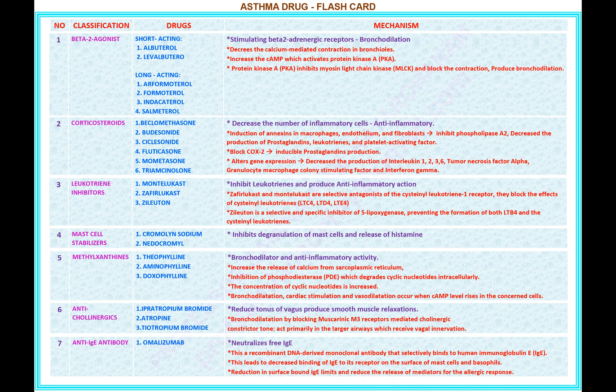Number 7 — name of the classification: anti-IgE antibody. Drug under this classification: 1) omalizumab. Mechanism of omalizumab: neutralizes free IgE. This is a recombinant DNA-derived monoclonal antibody that selectively binds to human immunoglobulin E (IgE). This leads to decreased binding of IgE to its receptor on the surface of mast cells and basophils. Reduction in surface-bound IgE limits and reduces the release of mediators for the allergic response.